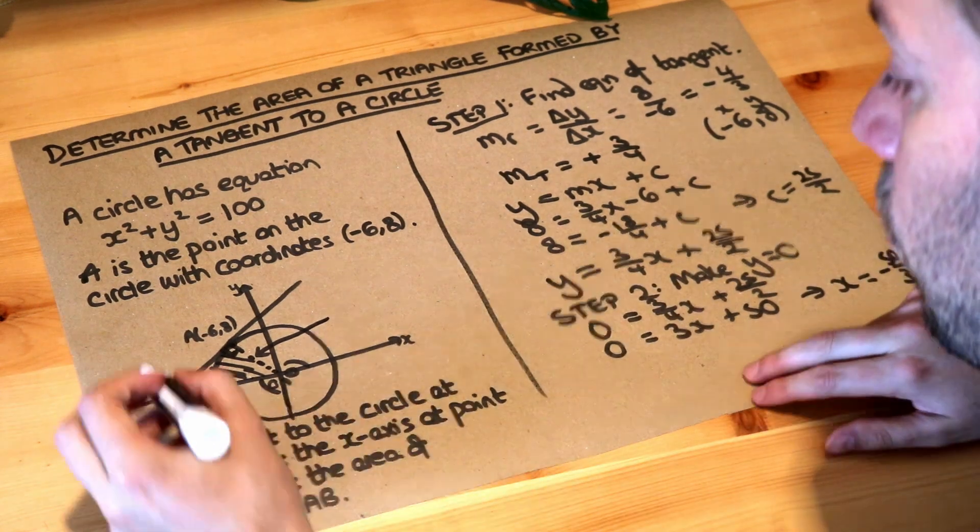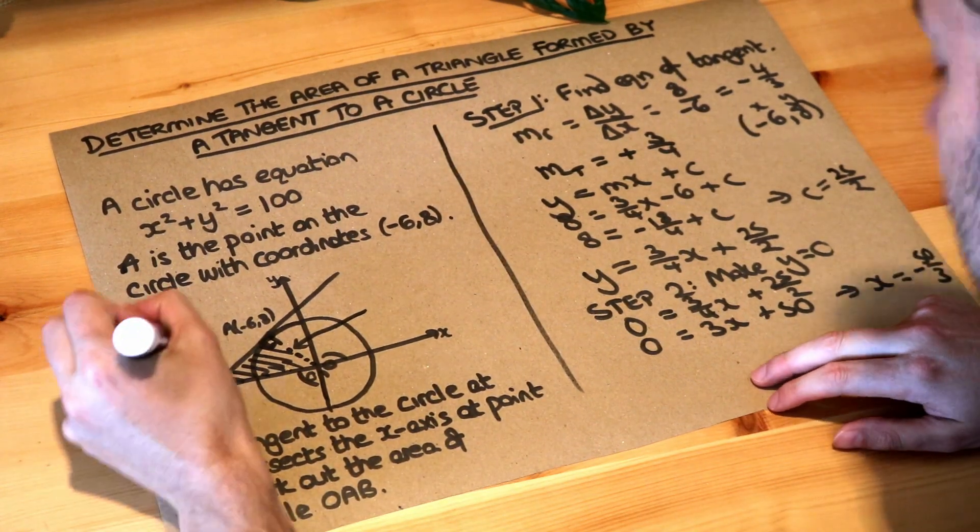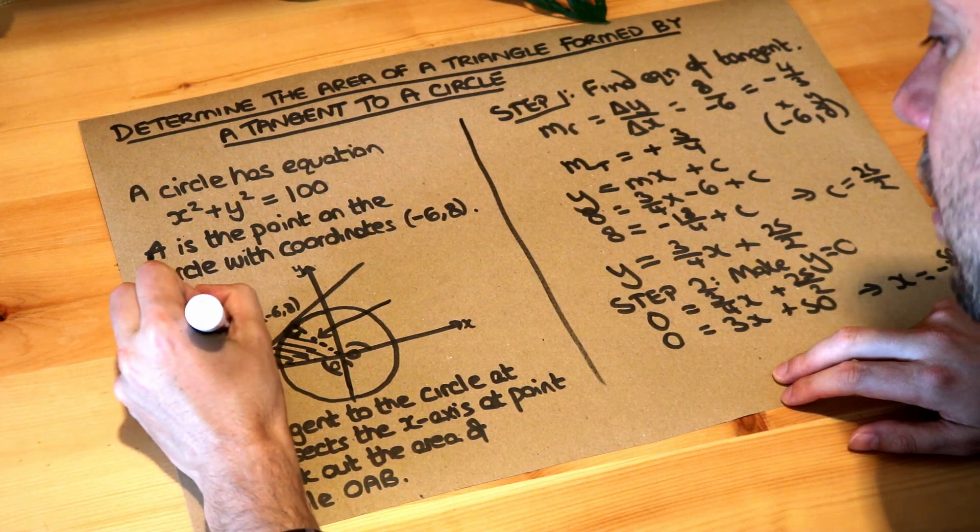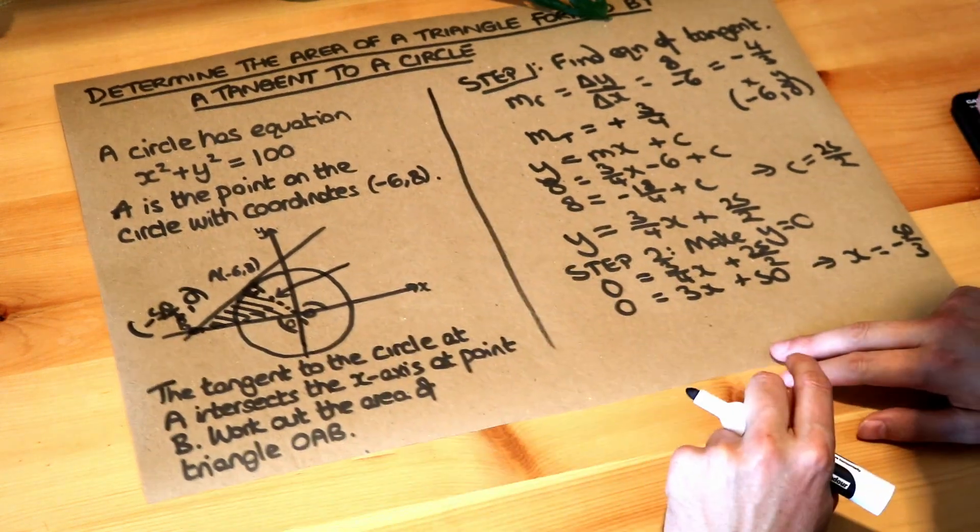So now we've got the coordinate of B. It's minus 50 over 3, and the y value here is obviously zero. So we've got that point, we've got that point, we've got that point.